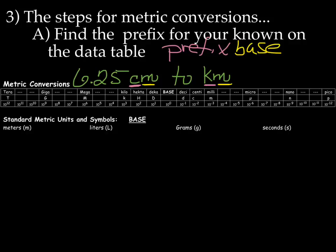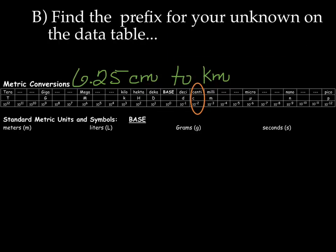So once again, the first step is to find the prefix for your known on the data table. And it's the cm that we know about because there's a number with it. And we're trying to get to km, so our known is 6.25 cm. So that prefix is the centi. So it's located right there. The next step is to find the prefix for your unknown in the data table, so the thing you're trying to convert to. And so we're looking for the prefix kilo, which is right there.